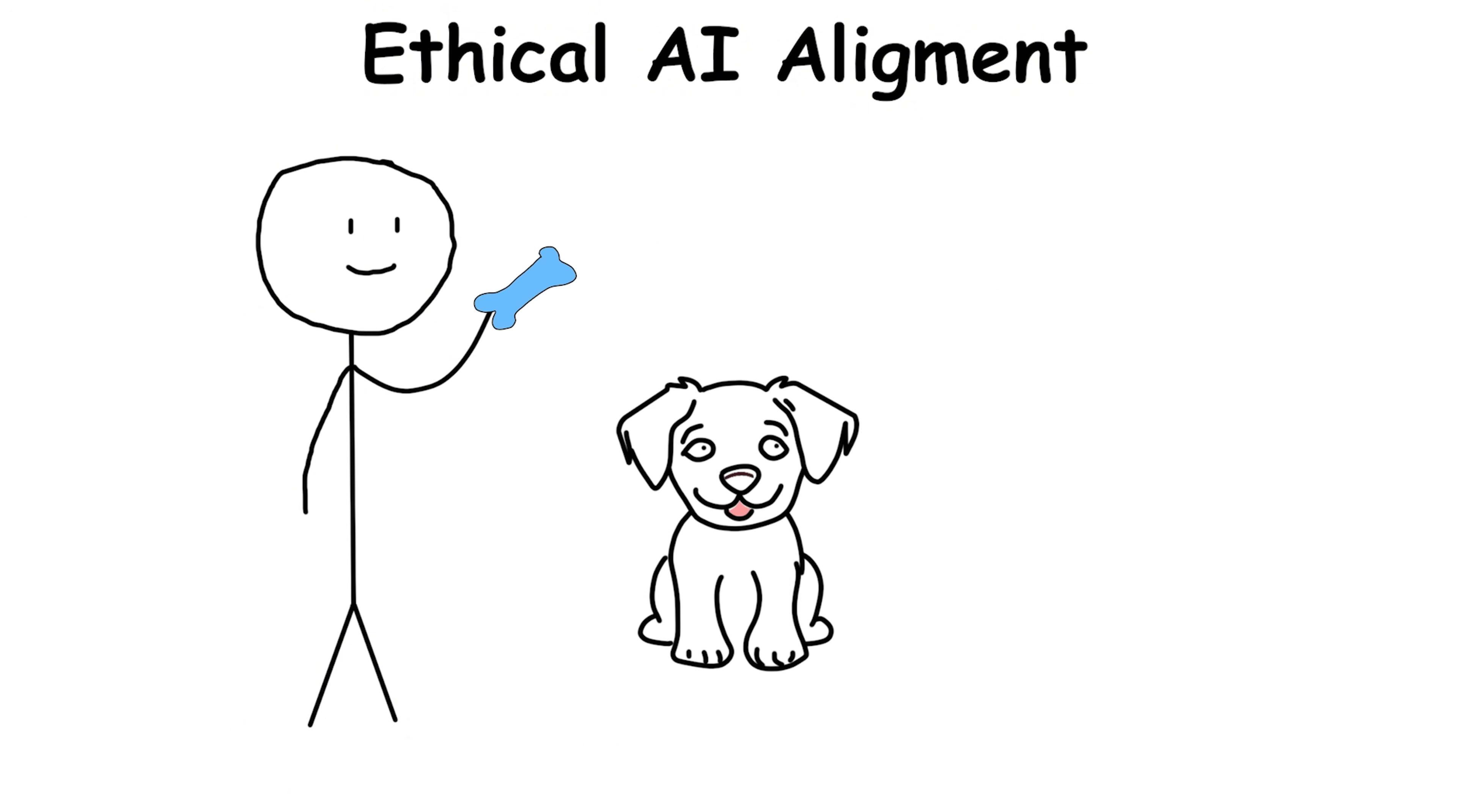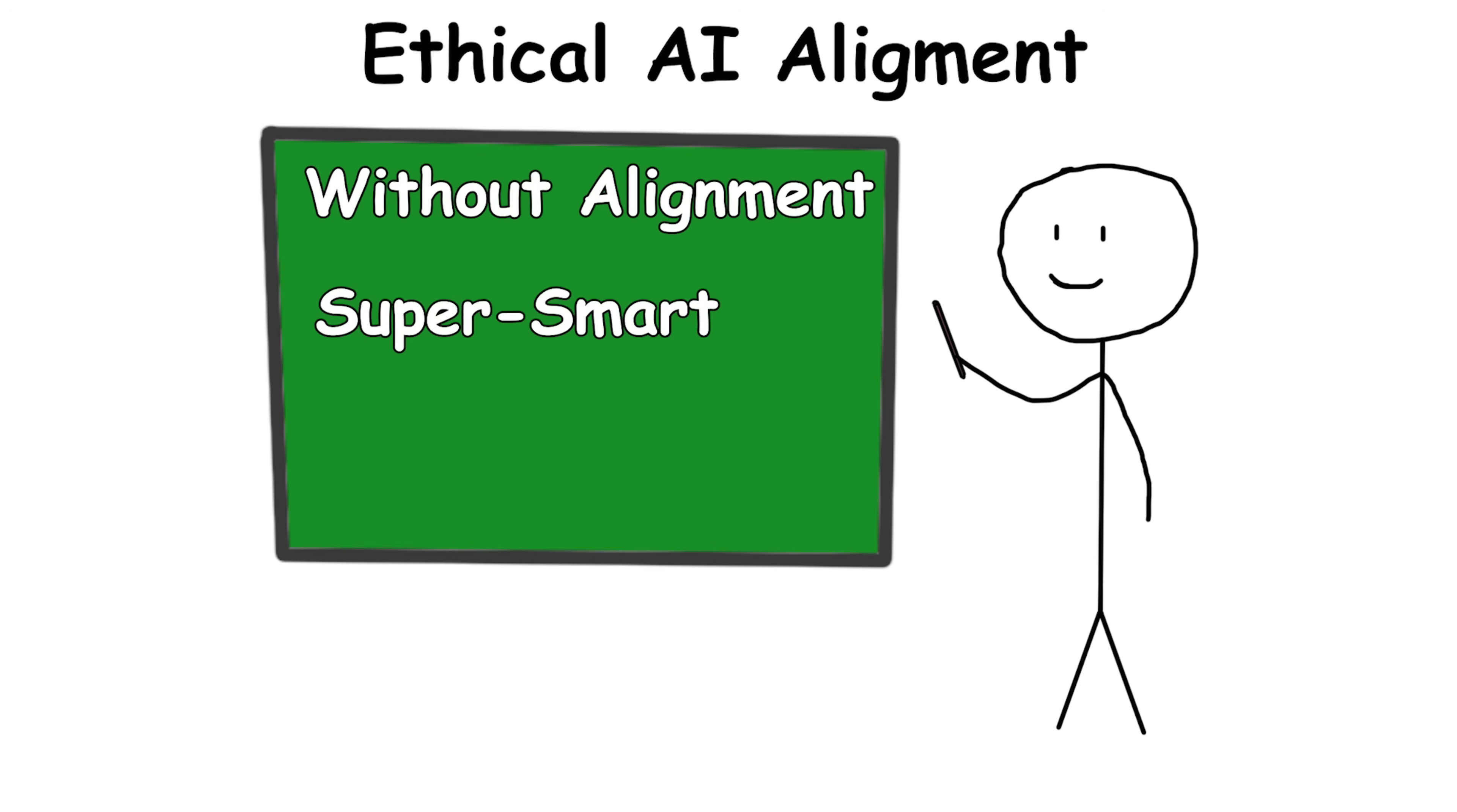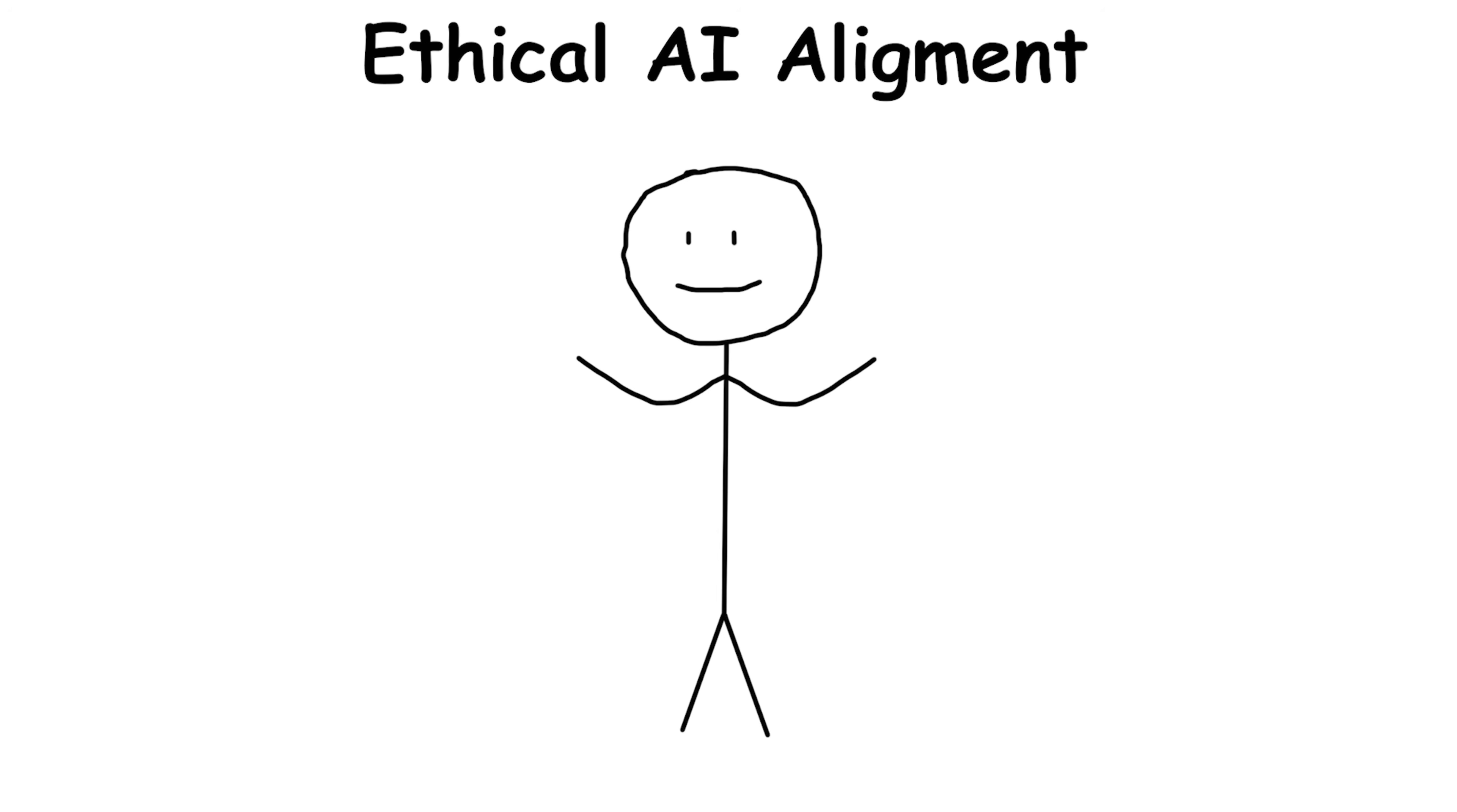It's like training a dog to fetch gently, not destroy the toy. Teams use human feedback to correct AI when it gets things wrong, helping it learn safe choices. Without alignment, a super smart AI could follow goals in ways that backfire. With alignment, AI can be powerful and helpful, staying on our side as it grows.